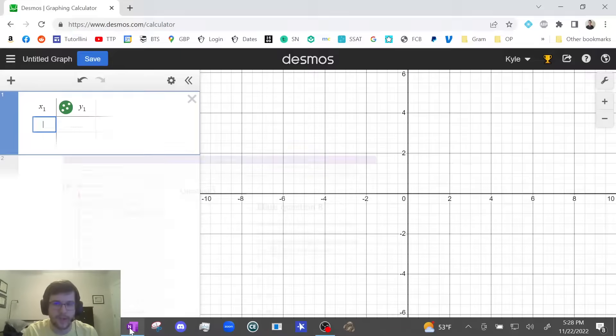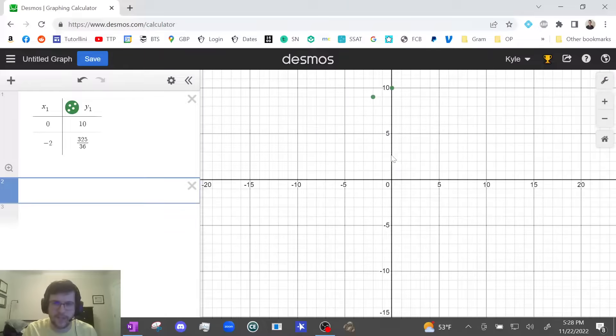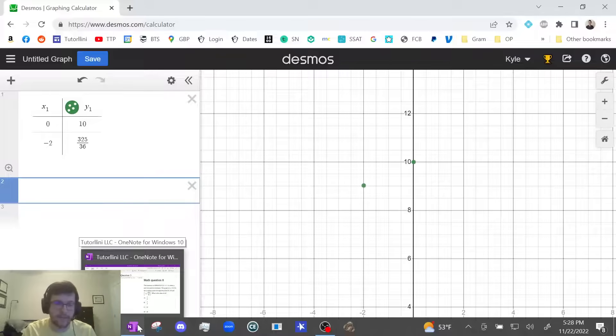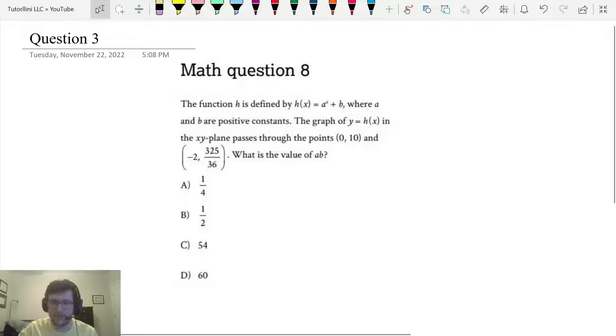And we'll put 0, 10. And we'll put negative 2 and 325 over 36. And I'm going to zoom out to see where those points are. Ah they're over here. And this is the crazy part. This question probably takes a minute or two. And honestly most kids could not get it right. However, look at this.